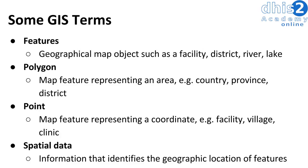We also have point data. These are map features that represent coordinates — this could be, for example, a facility, a village, a case of a particular disease, etc. Lastly, we have spatial data. Spatial data is information that identifies the geographic location of different features. As an example, spatial data will define where the points lie on a map.